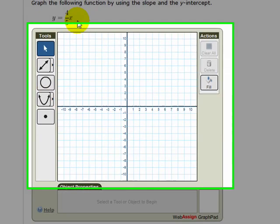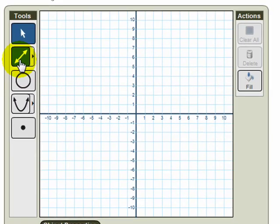So we would start by plotting the y-intercept, and we first choose the line tool from the graph pad. So click on the line tool, and then click where you want to put down a point. In this case, I'm going to put a point at 0, 0.